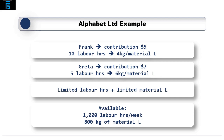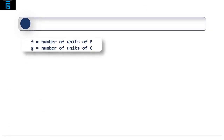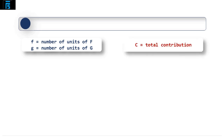Alphabet Limited wants to be able to make more greeters than francs as the demand for greeters is usually higher. So step 1 is to define our variables. Let us say that F is the number of units of product franc and G is the number of units of product greeter. We will also use C to represent total contribution. Based on this data we can start to put together some formulae to stipulate the various constraints.